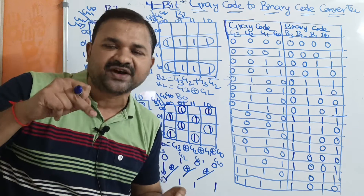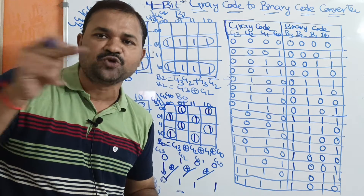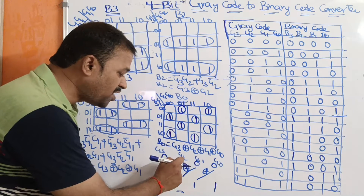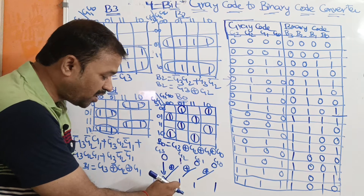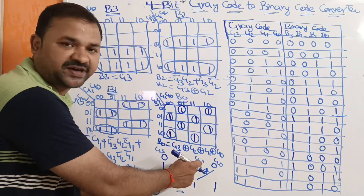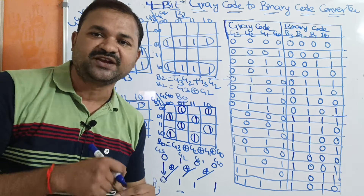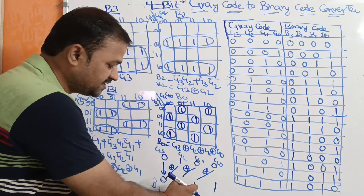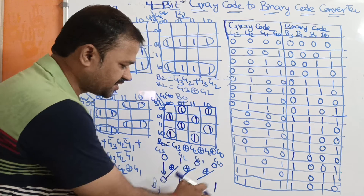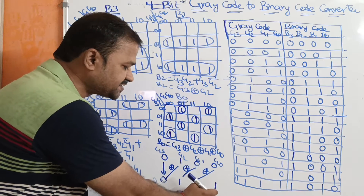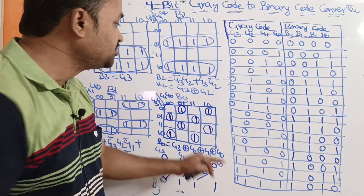So 0 exclusive-OR 1 means different bits, so the output is 1. That is b2. Next we perform exclusive-OR on b2 and g1: 1 exclusive-OR 0 means different bits, so the output is 1. That is b1. Next we perform exclusive-OR on b1 and g0: 1 exclusive-OR 0 means different bits, so the output is 1. So for grey code 0100, the binary code is 0111.